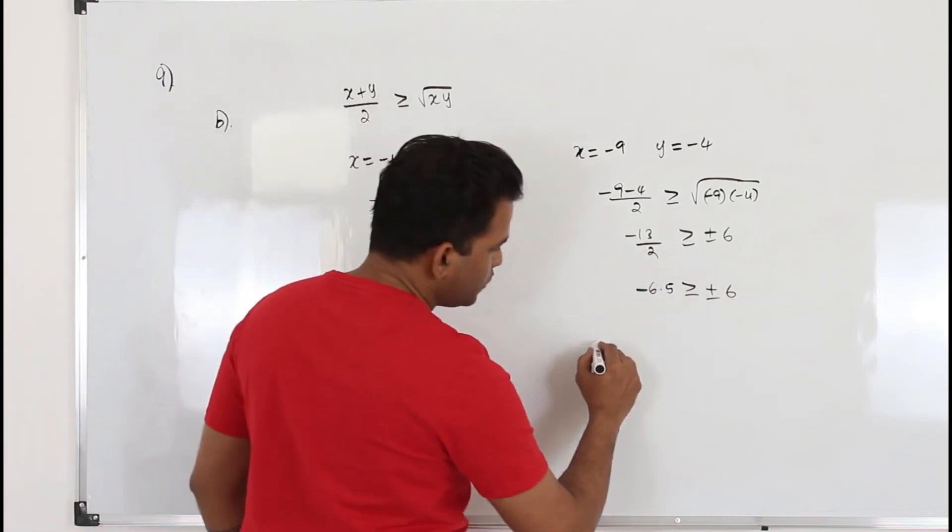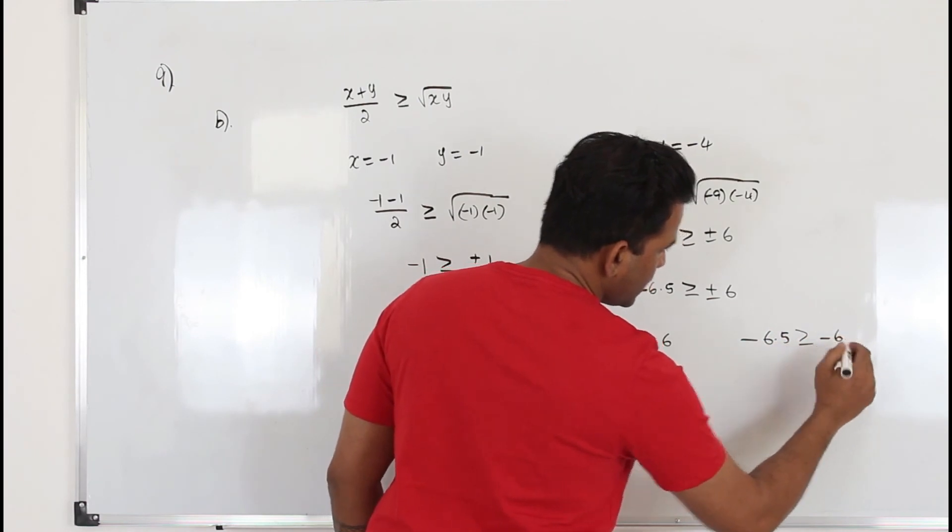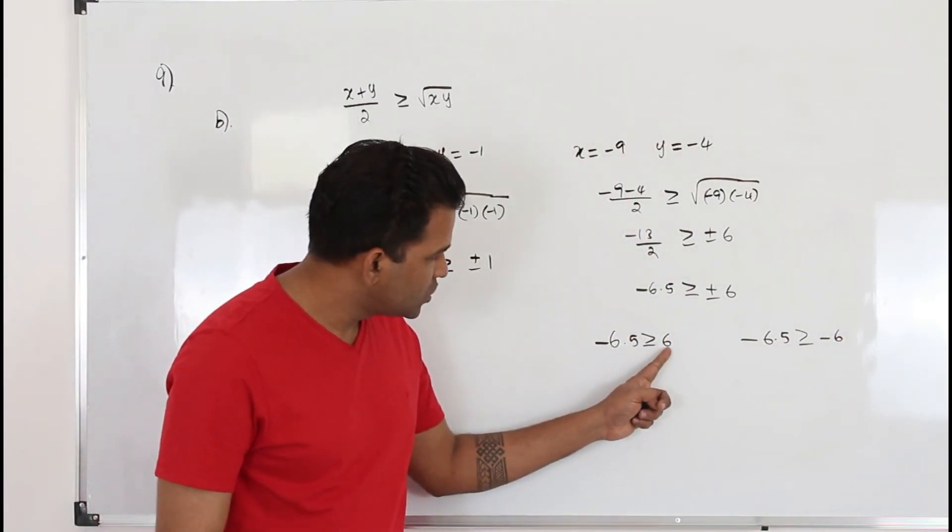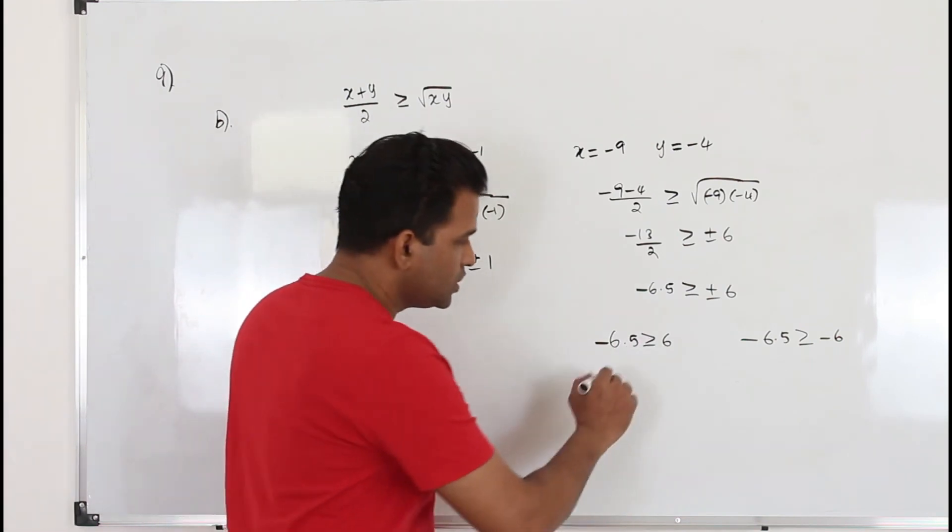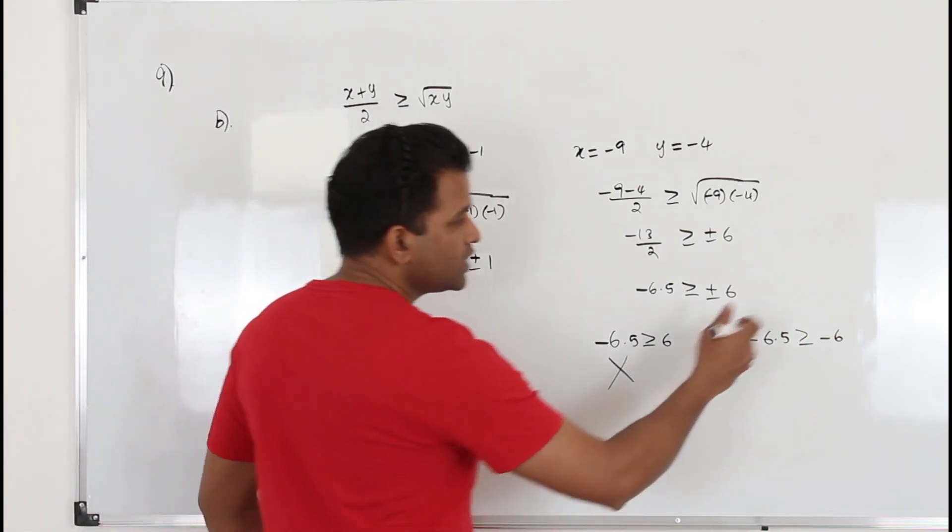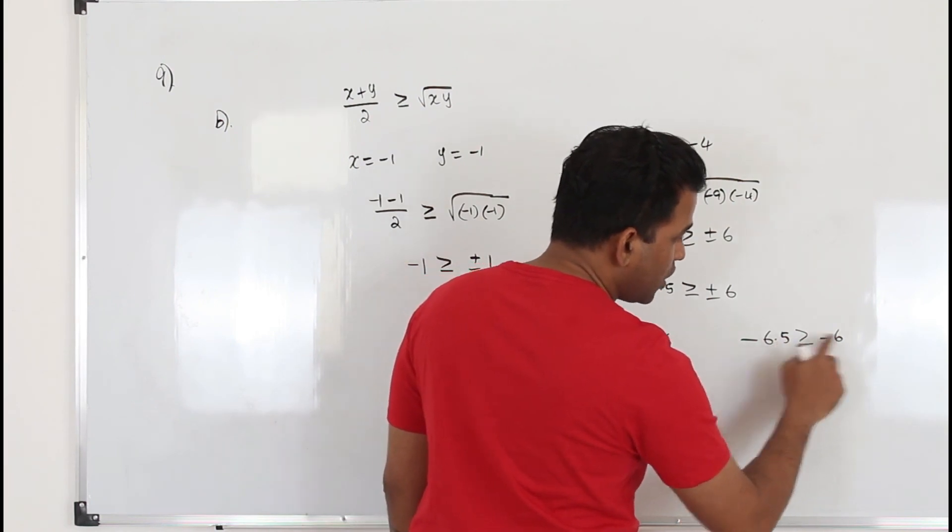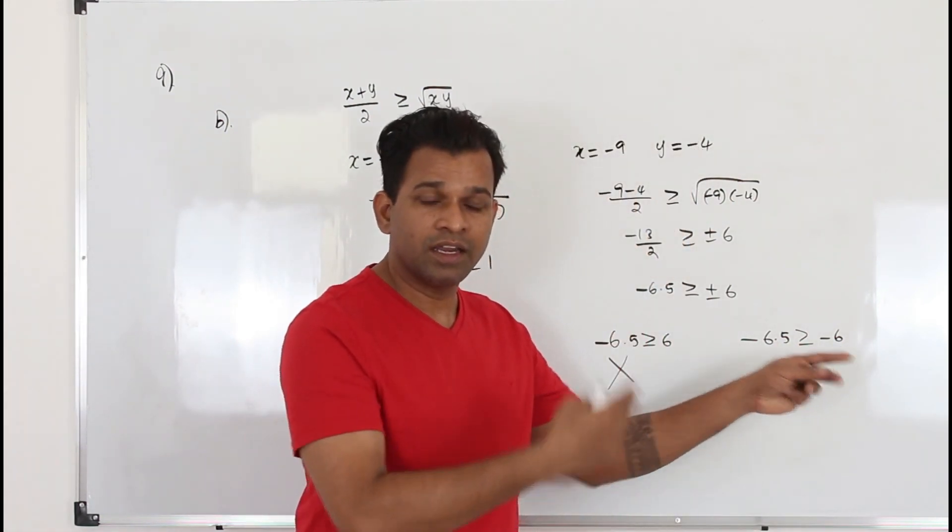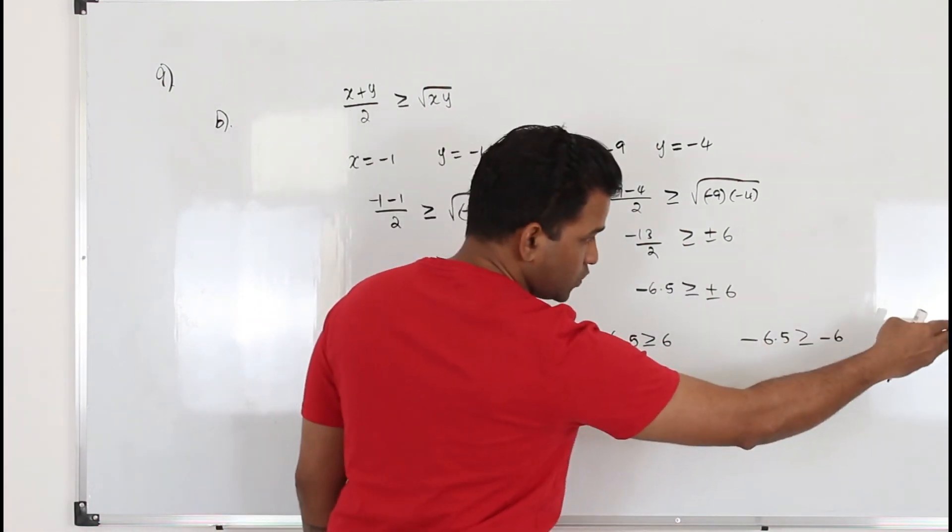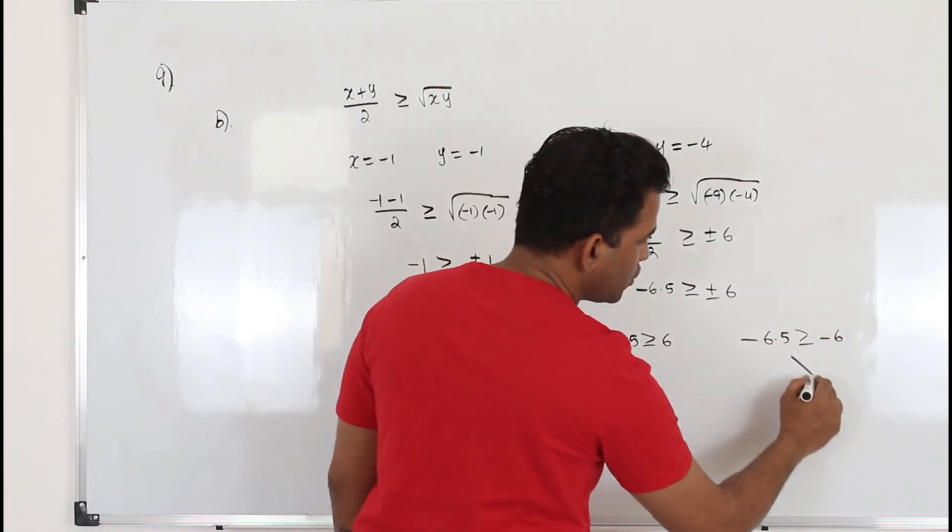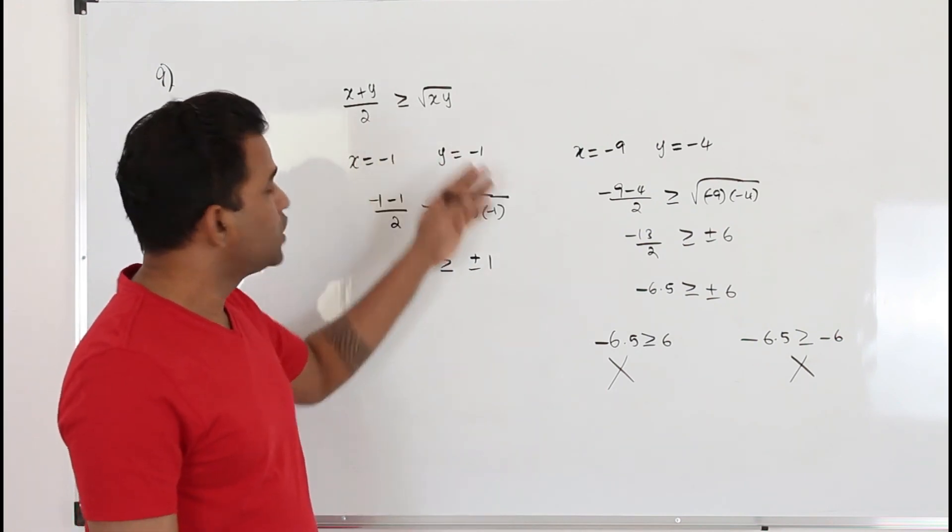Even if you take 6 and negative 6, or negative 6 and check. If it is 6, they are not equal and this number is not bigger than 6. So this inequality is wrong. Even if you take minus 6, they are not equal. And this number again is not bigger than minus. Minus 6 is the bigger number in negative. When you put negative sign, the minus 6 is closer to 0, not 6.5. So minus 6 is bigger. Again it's wrong. So you can say the inequality is wrong when both x and y are negative.